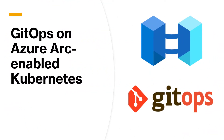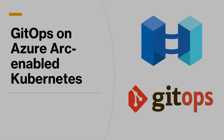That's it for GitOps on Azure Arc enabled Kubernetes. Remember, Microsoft is using Flux v1 today — hopefully in the summer of 2021 the Flux v2 preview will arrive and you can start using that new version. I hope you liked this one and see you again in another video.